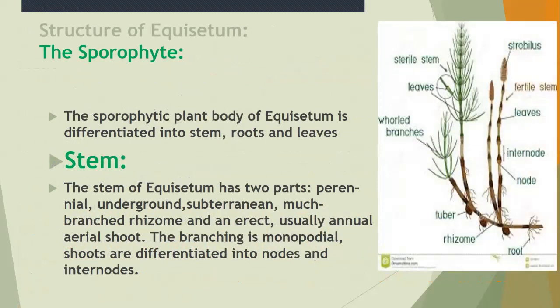The stem of Equisetum has two parts: the perennial underground subterranean much-branched rhizome, and an erect usually annual aerial shoot. The branching is monopodial. Shoots are differentiated into nodes and internodes.